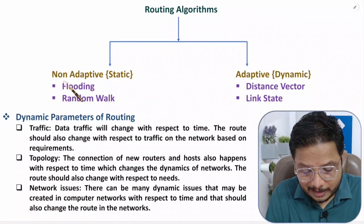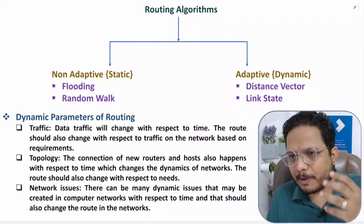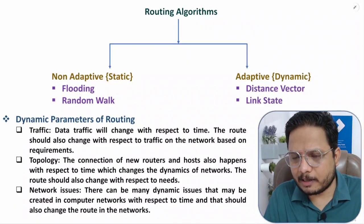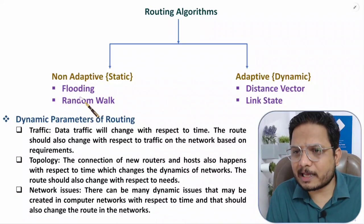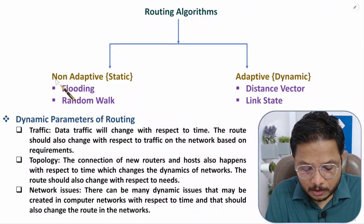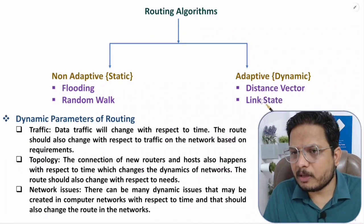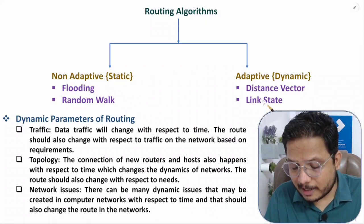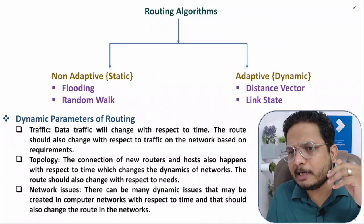There are two categories of routing algorithms, though thousands of algorithms exist in practice. Non-adaptive algorithms include flooding and random walk. Adaptive algorithms include distance vector and link state. Link state is the algorithm broadly used today in computer networks as of 2023, while distance vector was used in the 1990s and early 2000s.